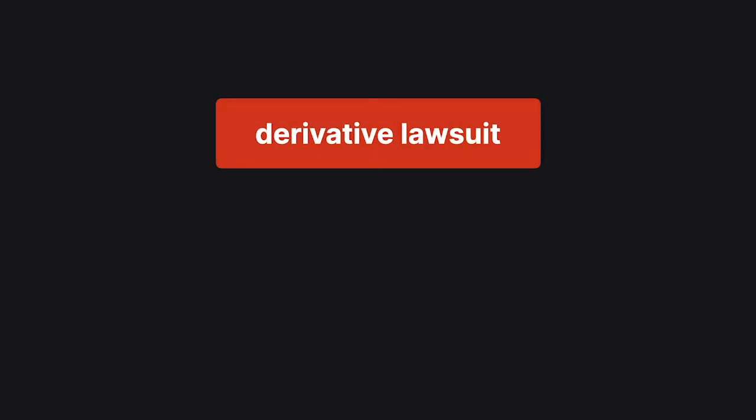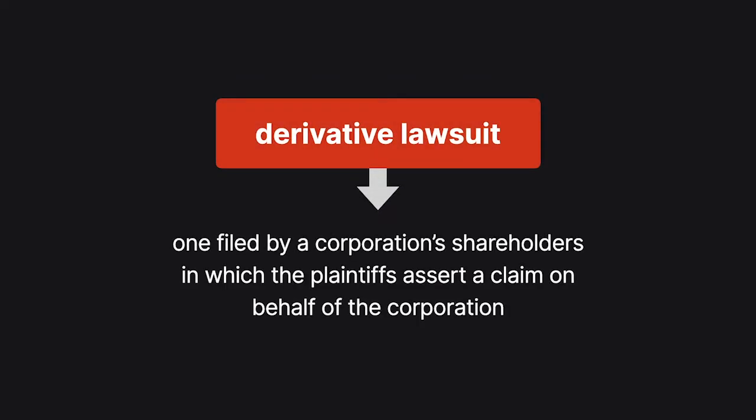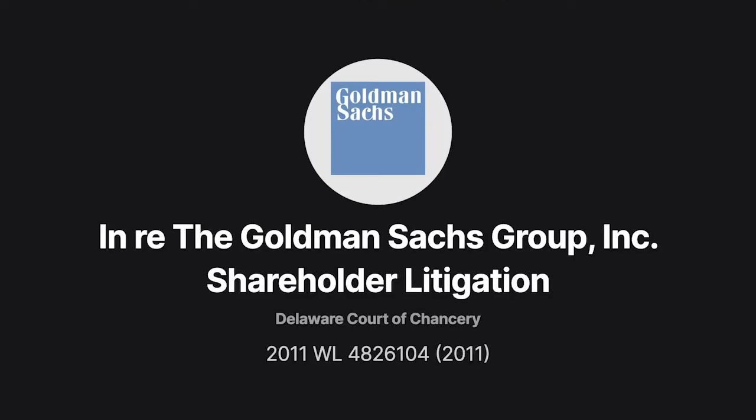A derivative lawsuit is one filed by a corporation's shareholders in which the plaintiffs assert a claim on behalf of the corporation. In the case In re the Goldman Sachs Group Incorporated Shareholder Litigation, we explore what plaintiffs must allege to bring a derivative lawsuit under Delaware law.